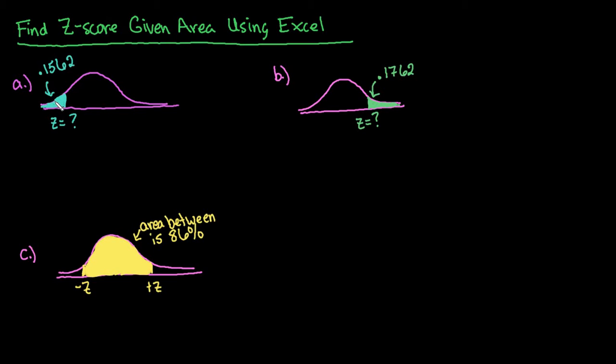So you always have to think in terms of all of the situations, what is the area that's actually shaded to the left? So the first one, this is the easiest one to do because it is area to the left. So we're trying to find a z-score that corresponds to an area to the left of 0.1562.